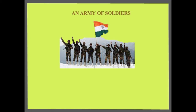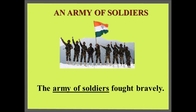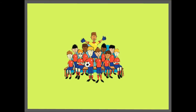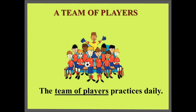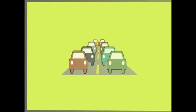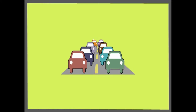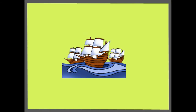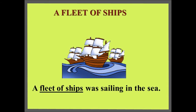Do you know what a group of soldiers is called? An army of soldiers. Sentence: An army of soldiers fought bravely. A group of players is called a team. Sentence: The team of players practice daily. A group of cars is called a fleet. Sentence: A fleet of cars followed the president's car. A collection of ships is also called a fleet. Sentence: A fleet of ships was sailing in the sea.